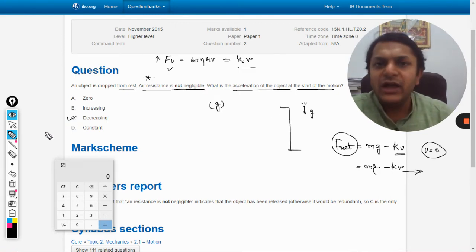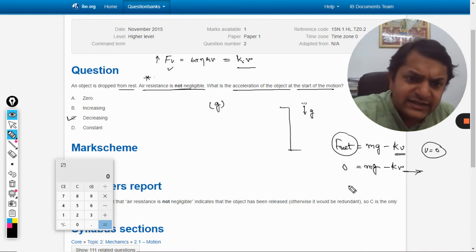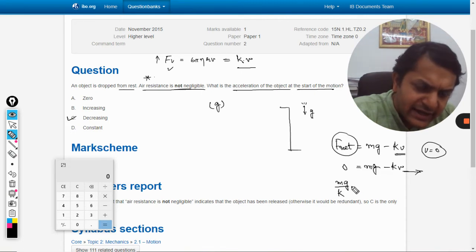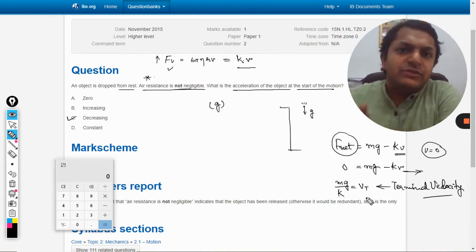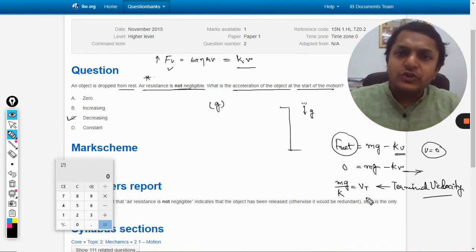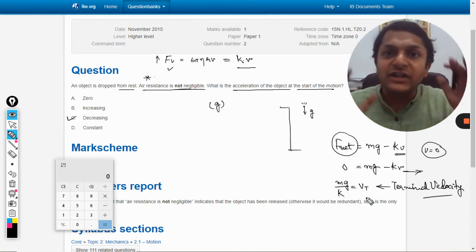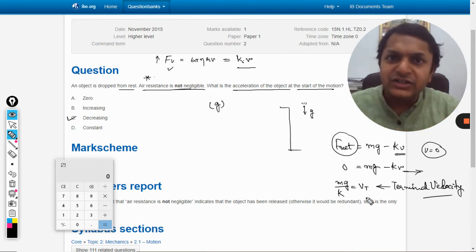When it becomes zero, mg divided by k equals v - this velocity is known as terminal velocity. It is the velocity that the body will gain after some time when the viscous force has grown and become equal to the weight, so Fnet is zero. At that time acceleration will become zero and the body will start falling with constant velocity, which otherwise is difficult to imagine if we do not consider air resistance.